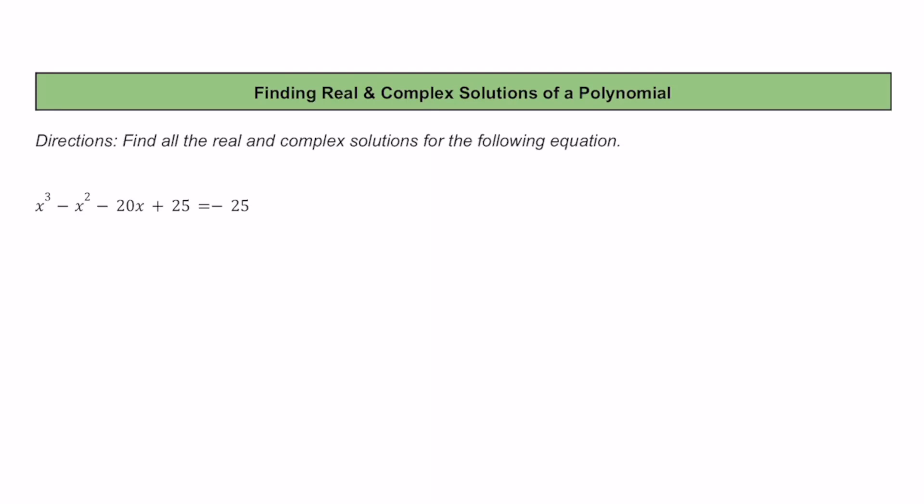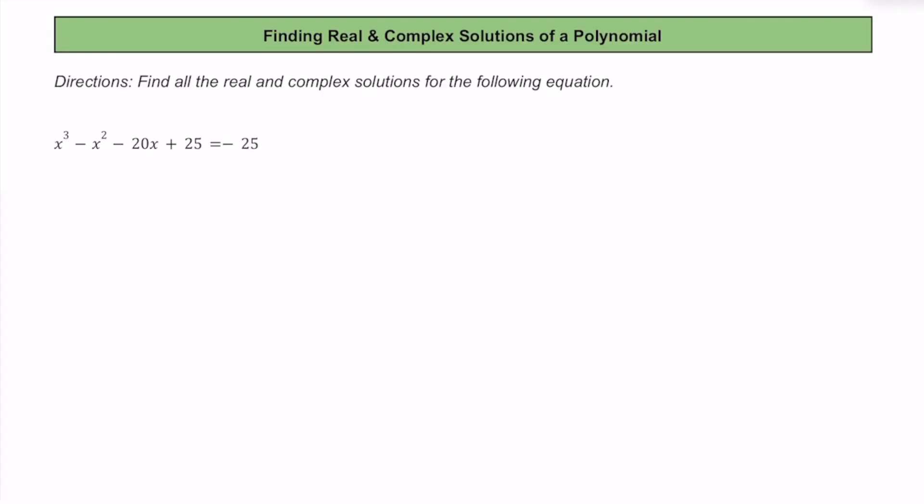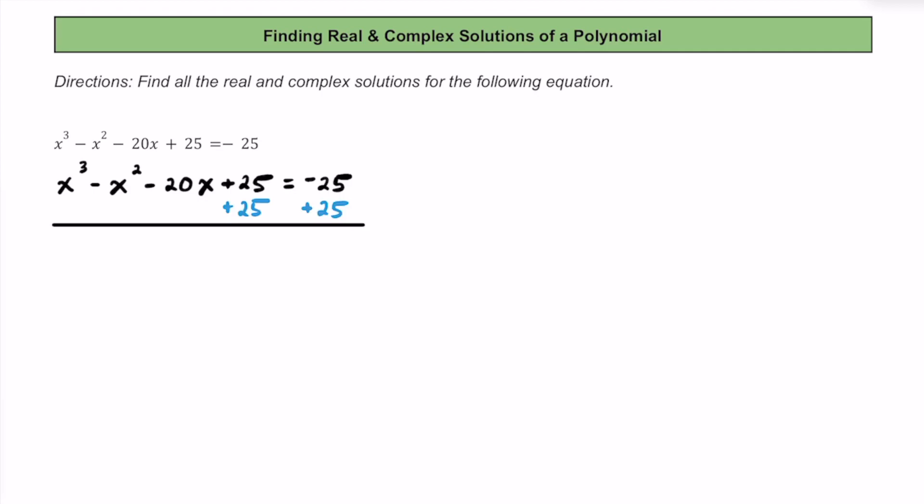In this video, let's see if we can find the real and complex solutions given a polynomial equation. Starting off, let's rewrite this equation. Since we're trying to solve this equation, we want to set it equal to 0. So if we add 25 to both sides of this equation, we're going to get x cubed minus x squared minus 20x plus 50 is equal to 0.